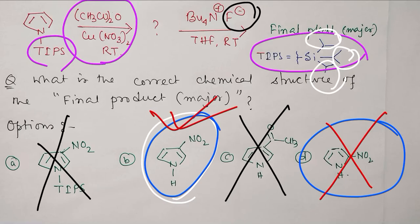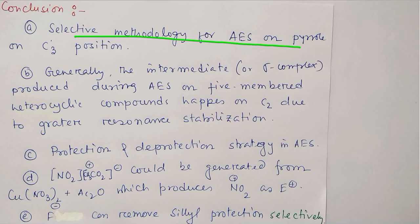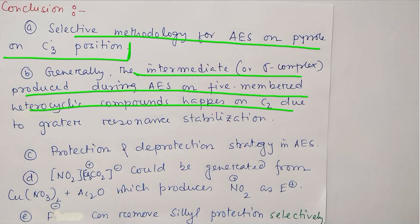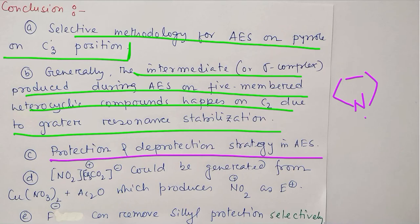In conclusion, what you learned today: we learned about selective methodology for aromatic electrophilic substitution on pyrrole at C3 position, which is generally difficult to obtain. Generally, the intermediate sigma complex produced during AES on five-membered heterocycle prefers C2 due to higher resonance stabilization of the sigma complex.